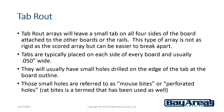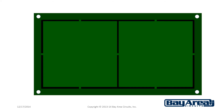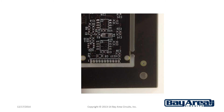The second fabrication type, tab route, will leave a small tab on all four sides of the boards attached to the other boards or the rails. This type of array is not as rigid as the scored array, but can be easier to break apart. Tabs are typically placed on each side of every board and are usually 0.050 inches wide. They will usually have small holes drilled on the edge of the tab at the board outline. Those small holes are referred to as mouse bites or perforated holes — I've even heard the term rat bites used. Here's an example of a two-up array that is tab routed with rails on all four sides and tabs on each side of the board with 0.100 inch spacing between. You can also see the perforated mouse bites on the edge of the tab, as well as a fiducial and a tooling hole in the rail.